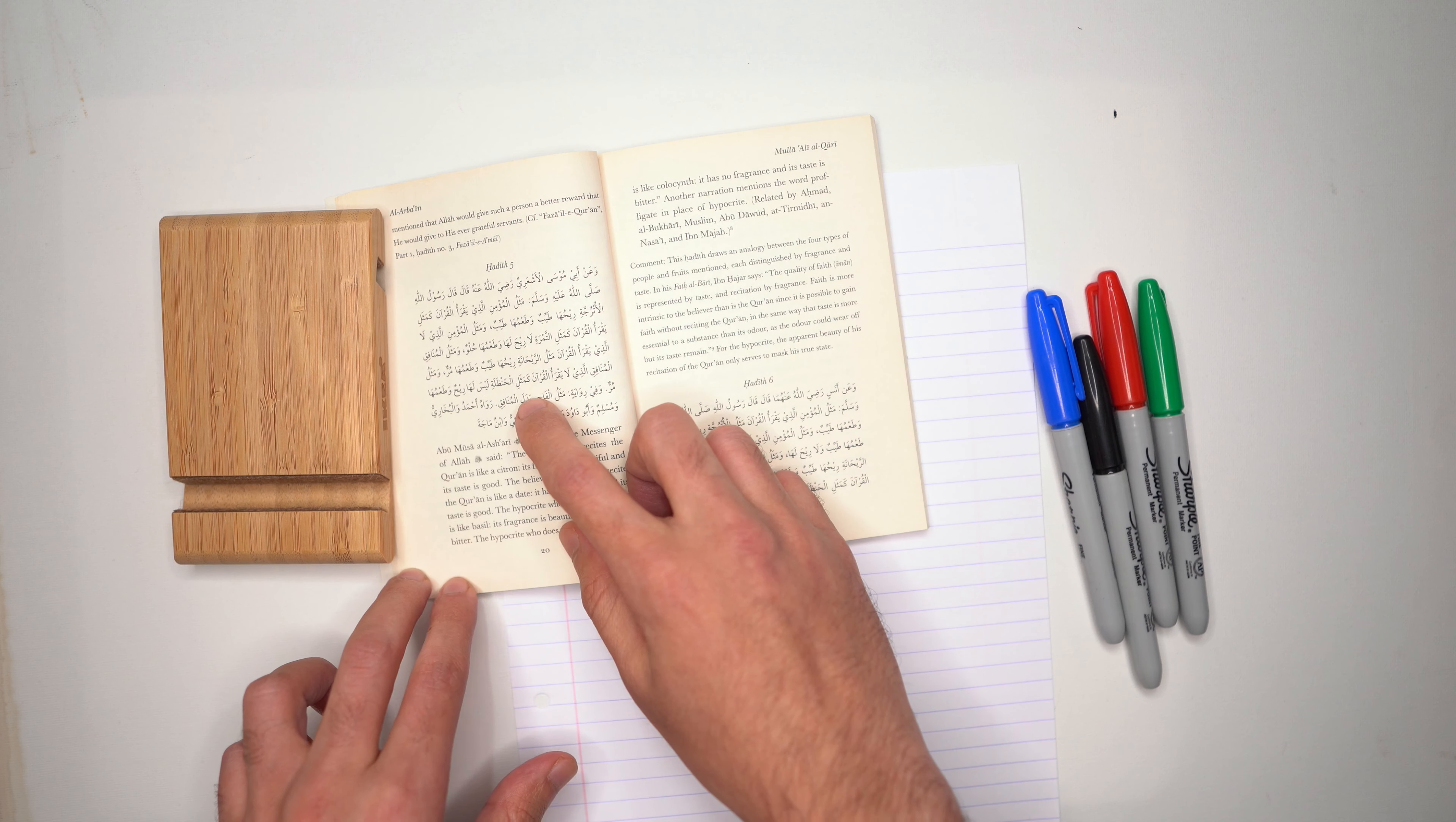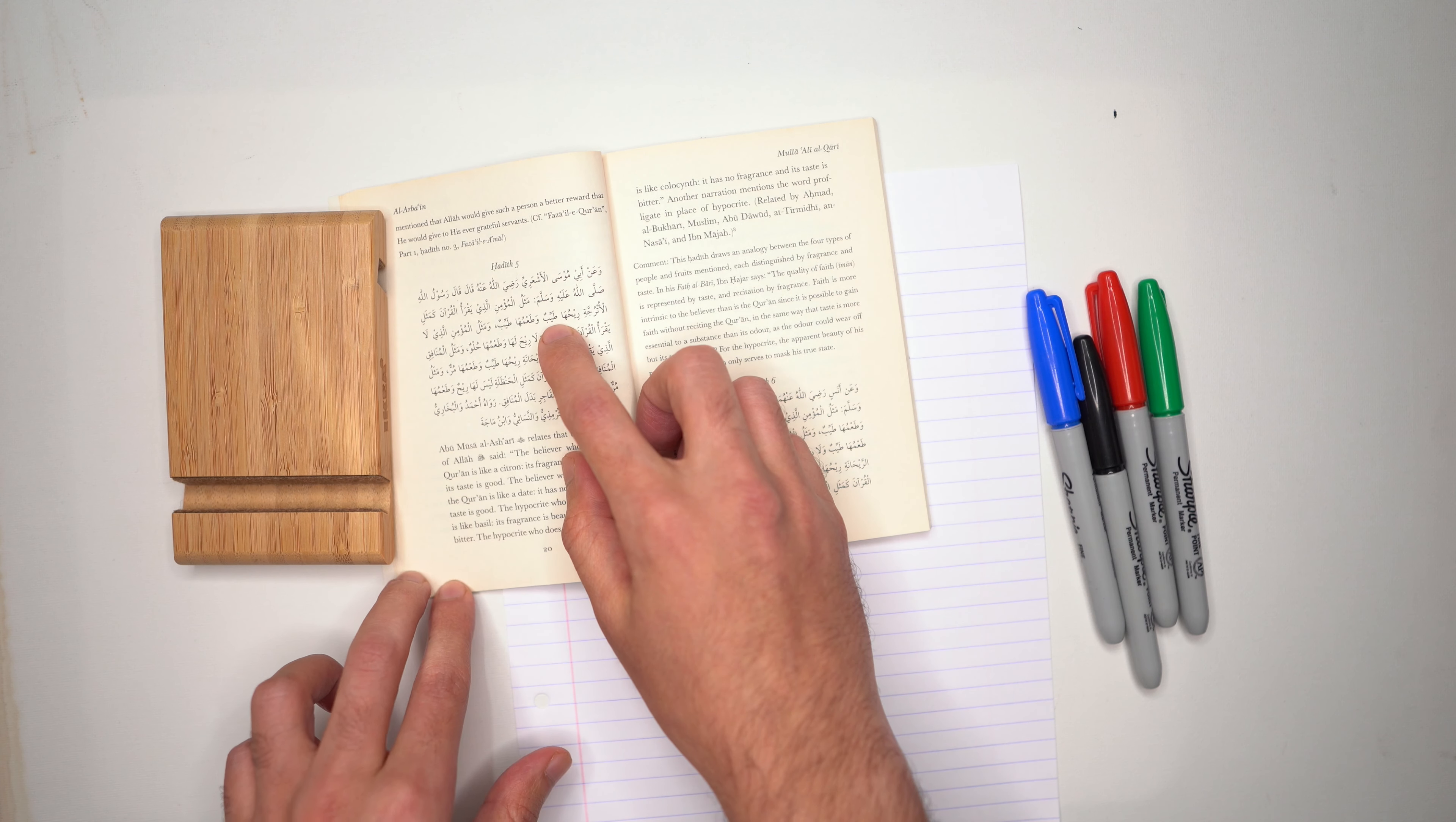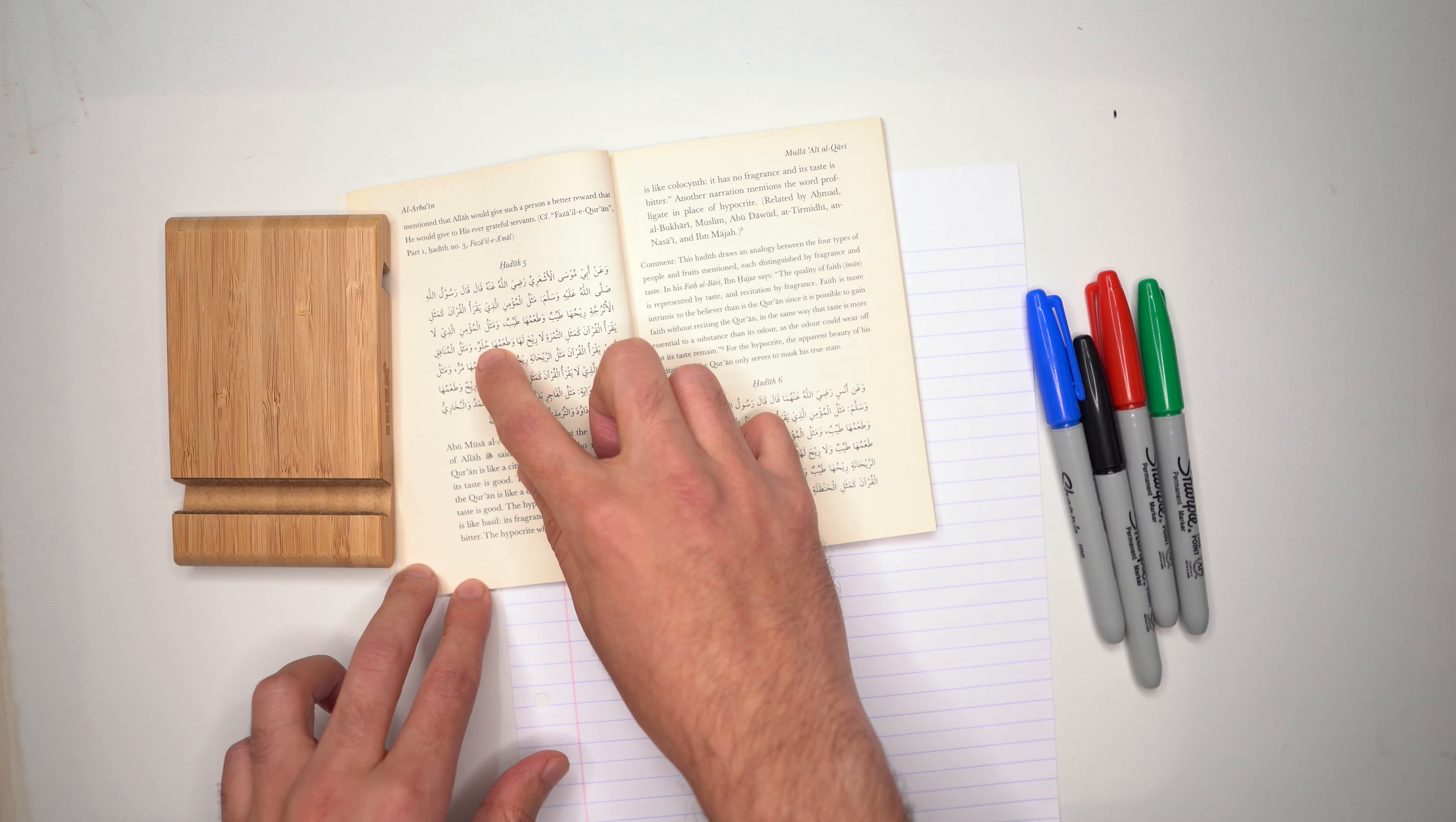وفي رواية مثل الفاجر بدل المنافق روه أحمد والبخاري ومسلم وابو داود ترميدي والنسائي وابن ماجه. It's reported from Abu Musa الأشعي رضي الله عنه that he said that the Messenger of Allah صلى الله عليه وسلم said: The example of the believer who recites the Qur'an is like the example of a citron fruit. Its fragrance is pleasant and its taste is pleasant. The example of a believer who doesn't read the Qur'an is like the example of a date - has no fragrance but its taste is sweet.